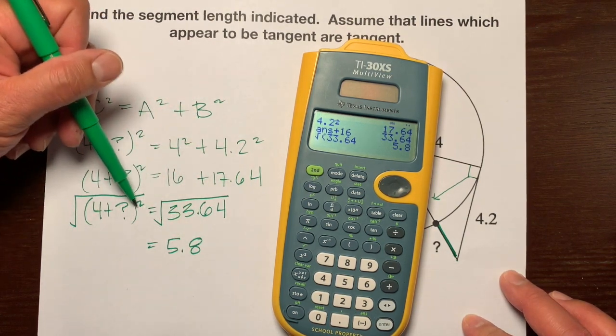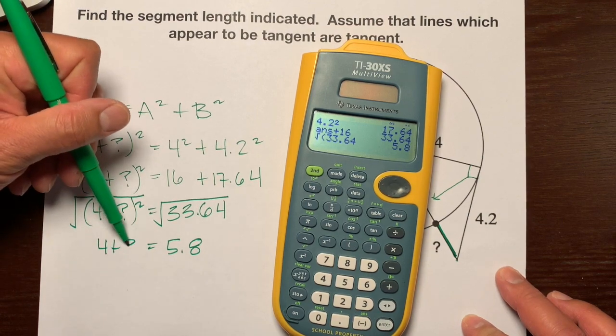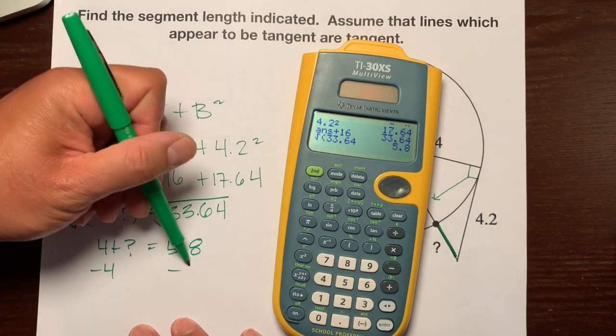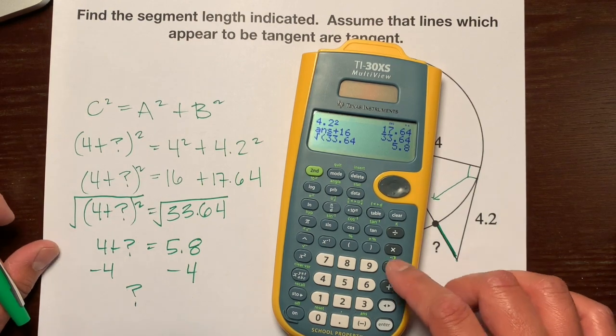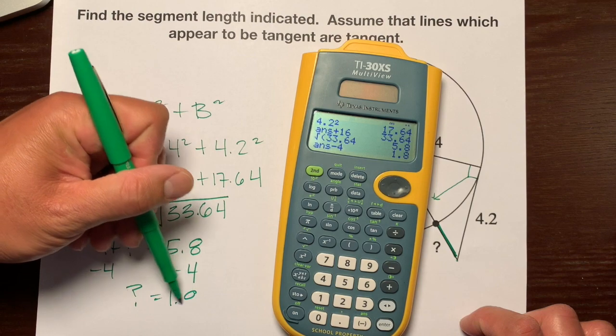And so now the square and the square roots or the radical cancel each other out. So we just have 4 plus question mark. And how do we get that question mark by itself? We subtract 4 from both sides. So the question mark, 5.8 minus 4 is 1.8.